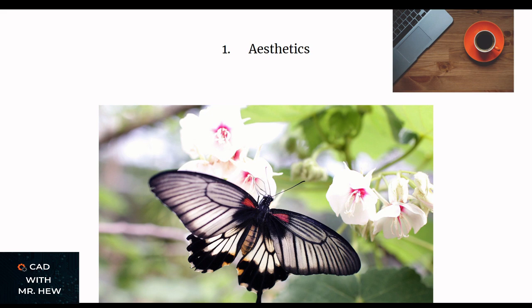First, aesthetics. Looking at the butterfly, you can see it has a range of colors — brown, black, gray, and a little bit of pink or purple, with a transparent white part. The wings are symmetrical; everything about the butterfly is symmetrical. So aesthetically, the design of the butterfly is, according to nature, excellent.